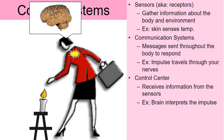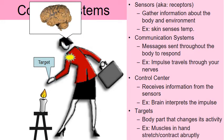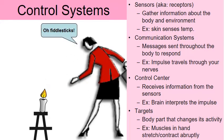The brain is going to respond by sending a signal to the target. The target is the body part that needs to change its activity. In this case, the brain is going to send a signal back to the hand. The hand has muscles that can pull away and remove the fingers from the heat to prevent any further damage. A good example of the various control systems maintaining balance.